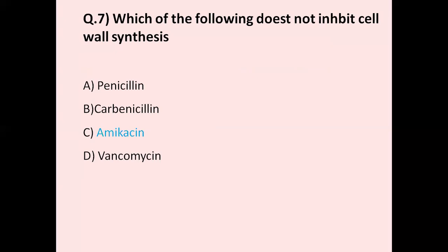Question number seven: Which of the following does not inhibit cell wall synthesis? Option A penicillin, option B carbenicillin, option C amikacin, option D vancomycin. The correct answer is amikacin, as it does not inhibit cell wall synthesis.